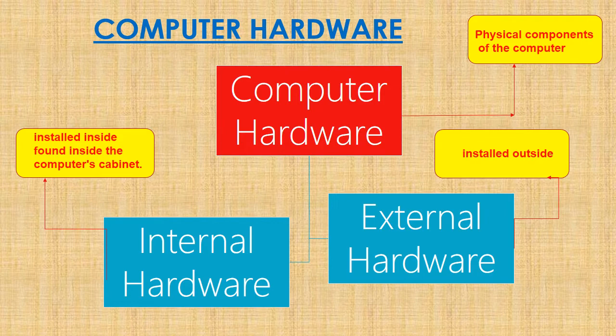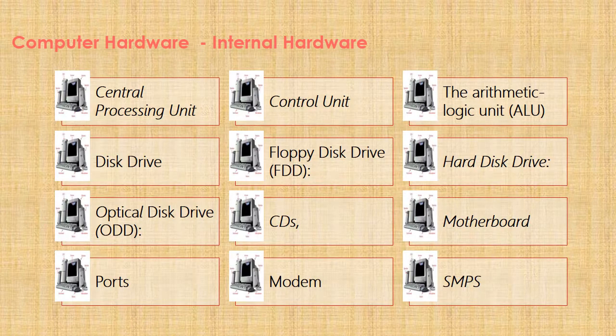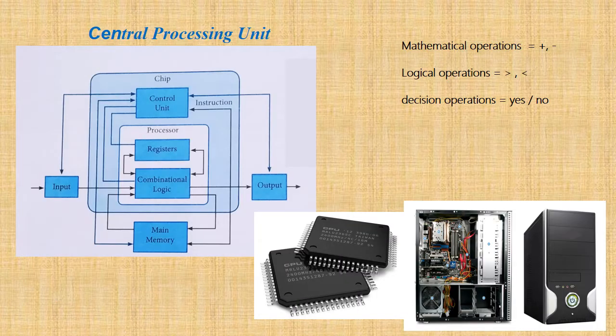For example, the internal hardware devices are: Central Processing Unit, Control Unit, Arithmetic and Logic Unit, floppy disk drive, optical disk drive, CDs, motherboard, ports, modem, and SMPS. These are the internal hardware devices.